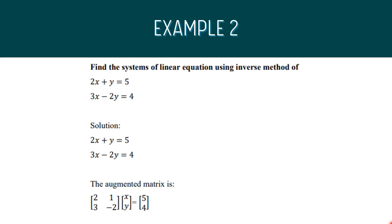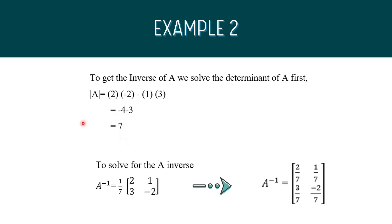For Example 2, find the solution to the system of linear equations using the inverse method: 2x plus y equals 5, and 3x minus 2y equals 4. This time, we will use determinants to solve for the inverse of A. To get the inverse of A, we first solve the determinant of A using the augmented matrix: (2)(negative 2) minus (1)(3), giving us the determinant of A equal to 7. We then use 1/7 multiplied by the matrix [2, 1; 3, negative 2], giving us A inverse: [2/7, 1/7; 3/7, negative 2/7].